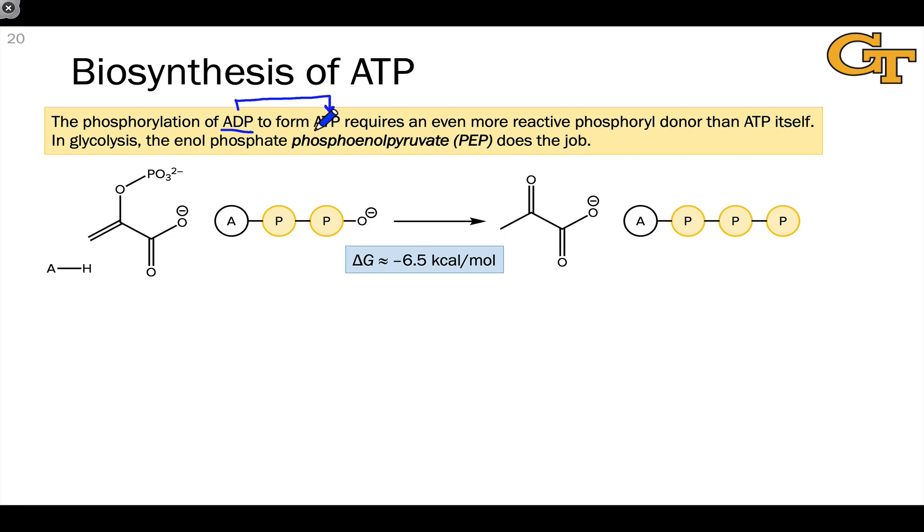Thermodynamically, in order to do this, we need a molecule that's an even stronger phosphoryl donor than ATP itself. In the midst of glycolysis, it's the enol phosphate intermediate phosphoenolpyruvate, or PEP, that does the job.